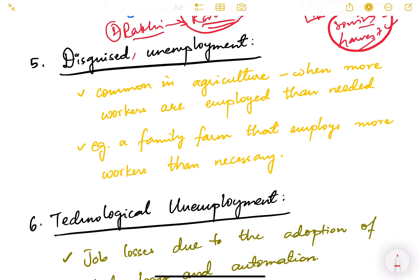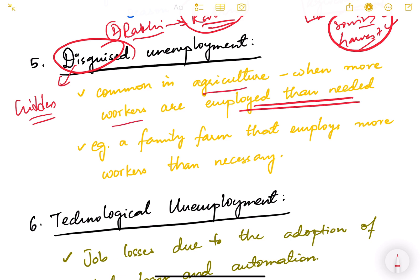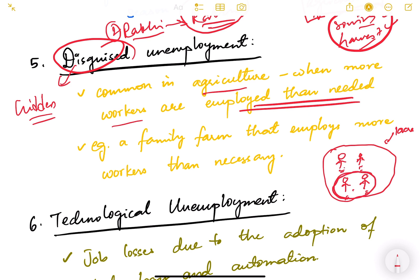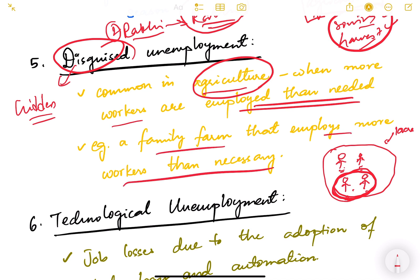Disguised unemployment means hidden unemployment — it is not visible. It is common in agriculture when more workers are employed than actually needed. For example, if only two laborers are required to work on one acre of farmland but four people are working there, two of them are disguised unemployed. They appear employed but are not getting meaningful employment and are not truly needed. Example: a family farm that employs more workers than necessary.